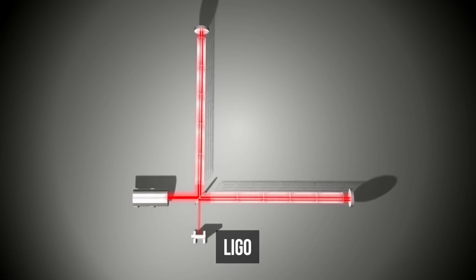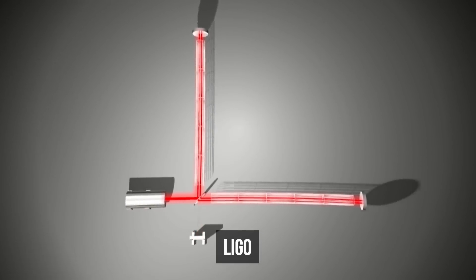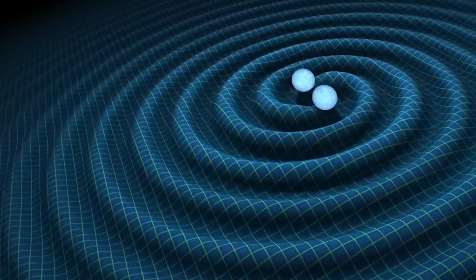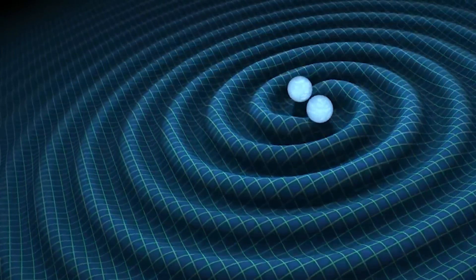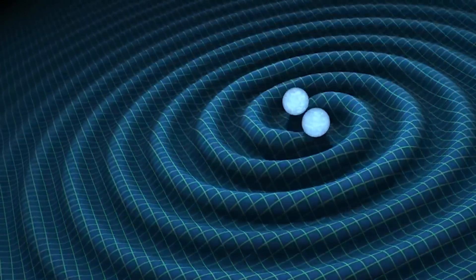Every week, the LIGO detector captures gravitational waves emanating from collisions between black holes and neutron stars millions of light-years away.